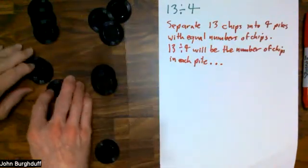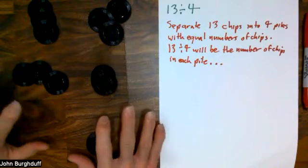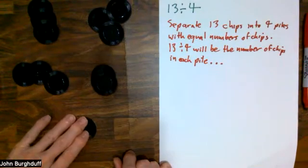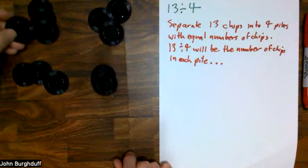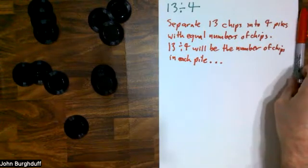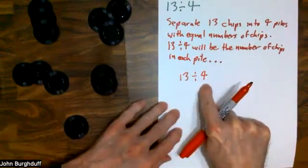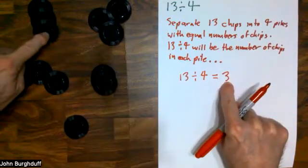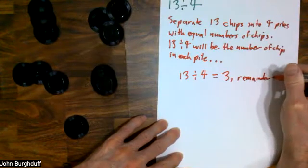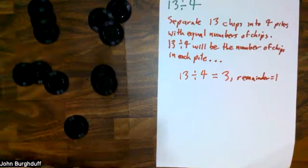You will see if you look at these piles that there are three chips in each pile. So 13 divided by 4 will go three times, but there is a problem — there's one chip that didn't fit. I can't add it to a pile because if I do, the piles will be unequal in size. This is what we call a remainder. So 13 chips divided into four piles will give you three chips in each pile with a remainder of one. Division often has remainders, and that illustrates that fact.